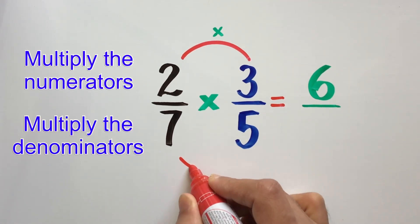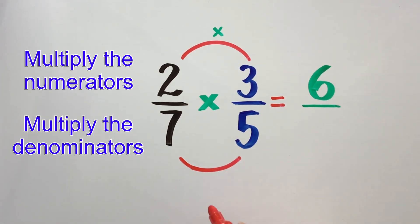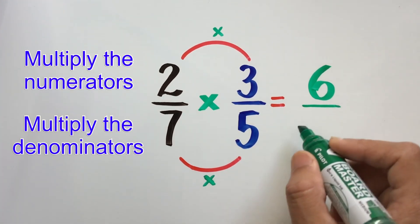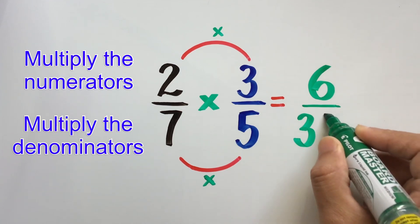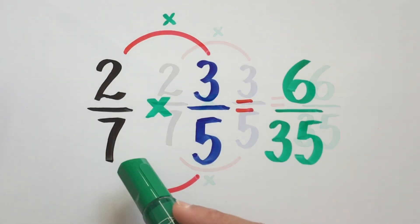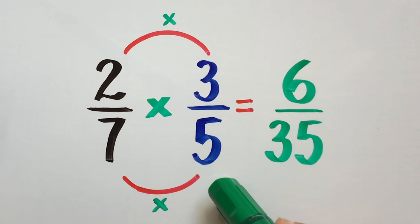Likewise, we also multiply the bottom numbers or the denominators. So in this case, 7 times 5 which gives us 35. So the fraction 2 over 7 when multiplied by 3 over 5 gives us 6 over 35.